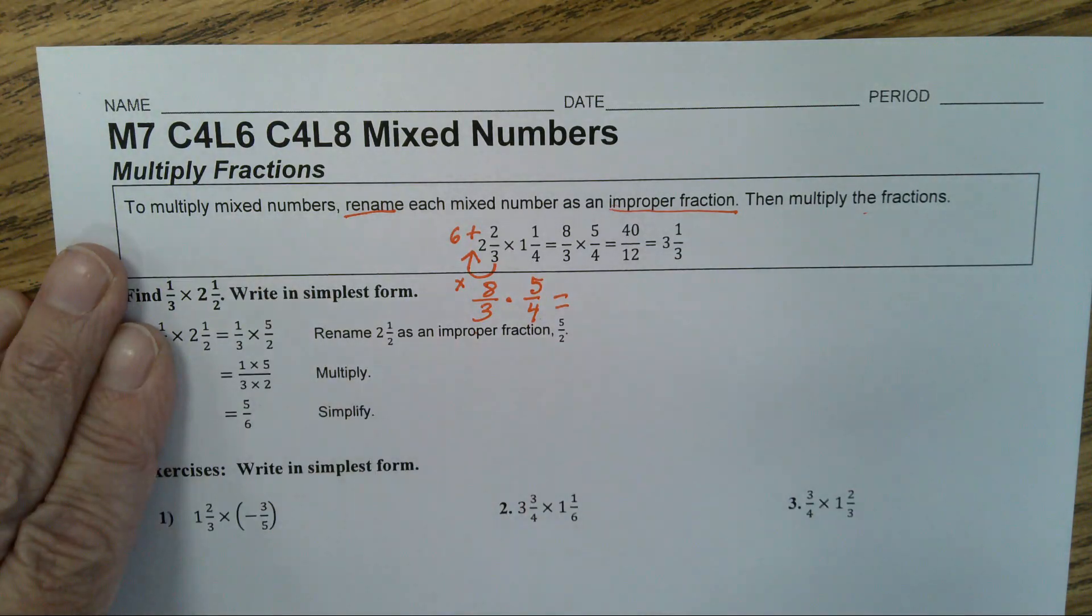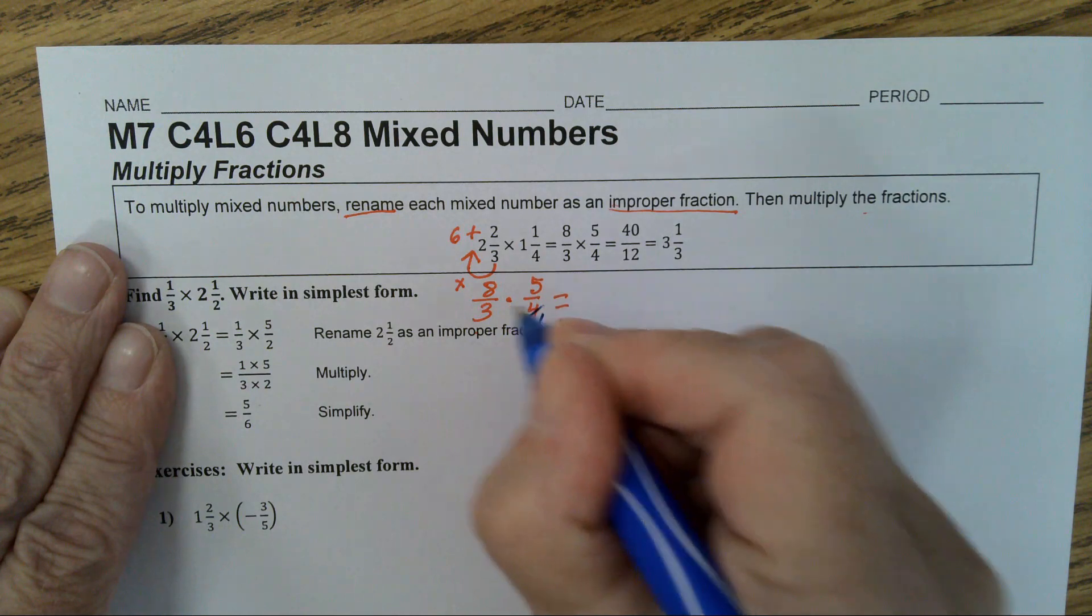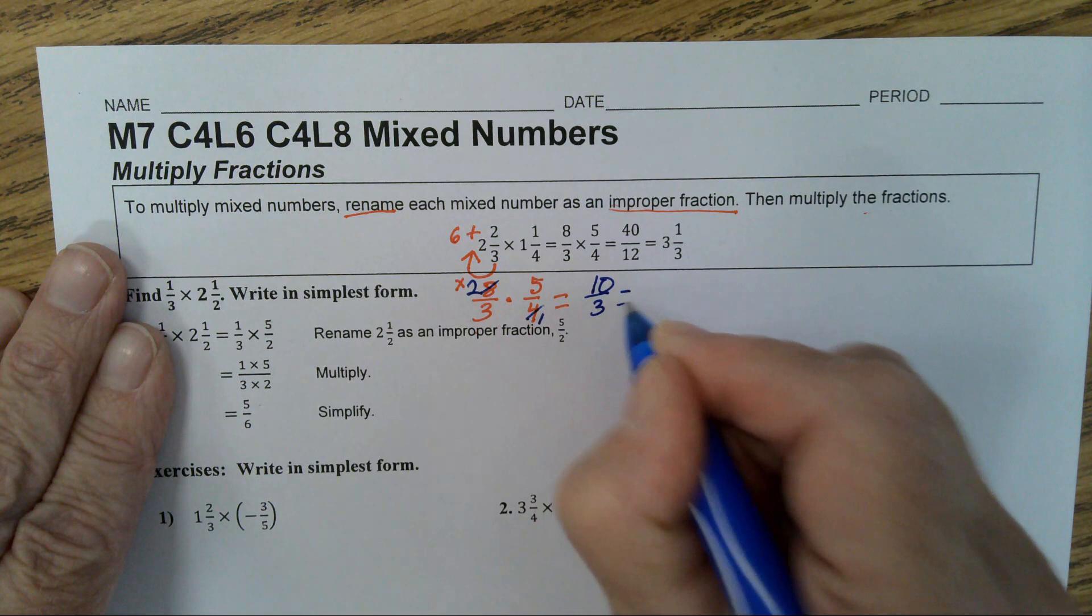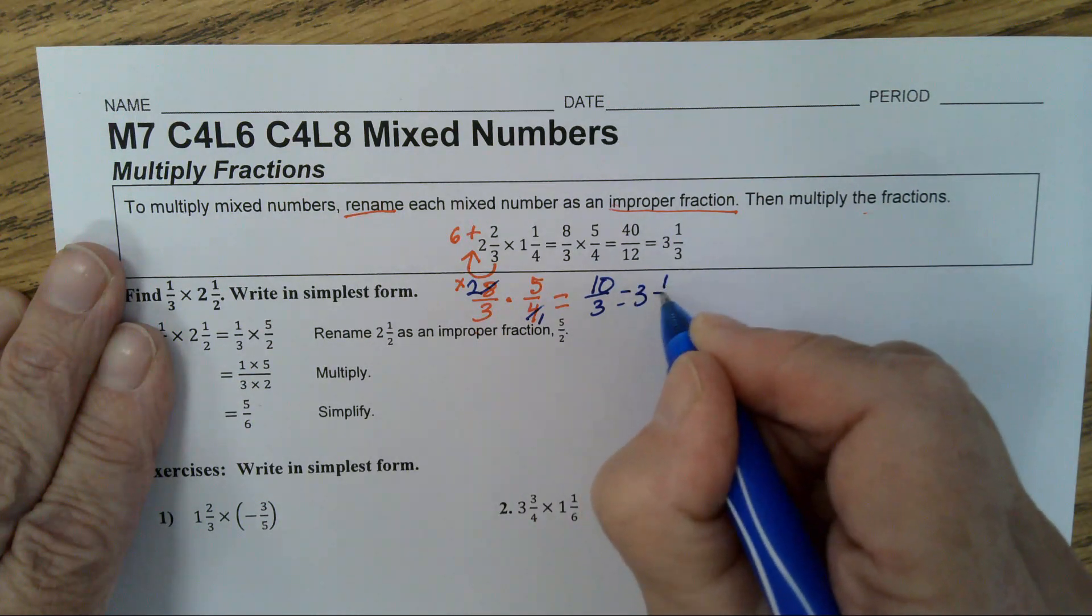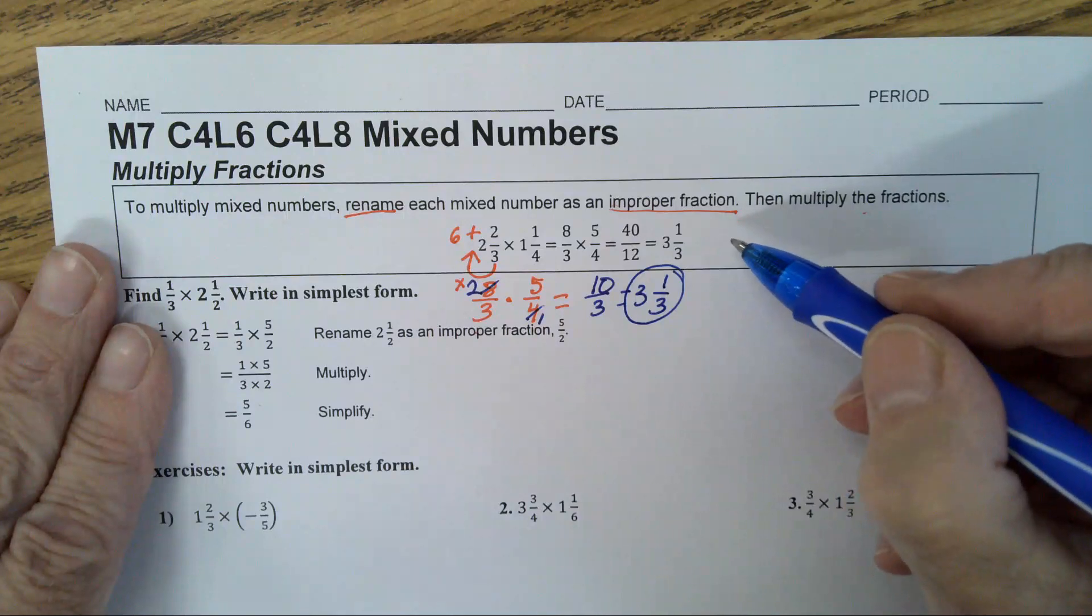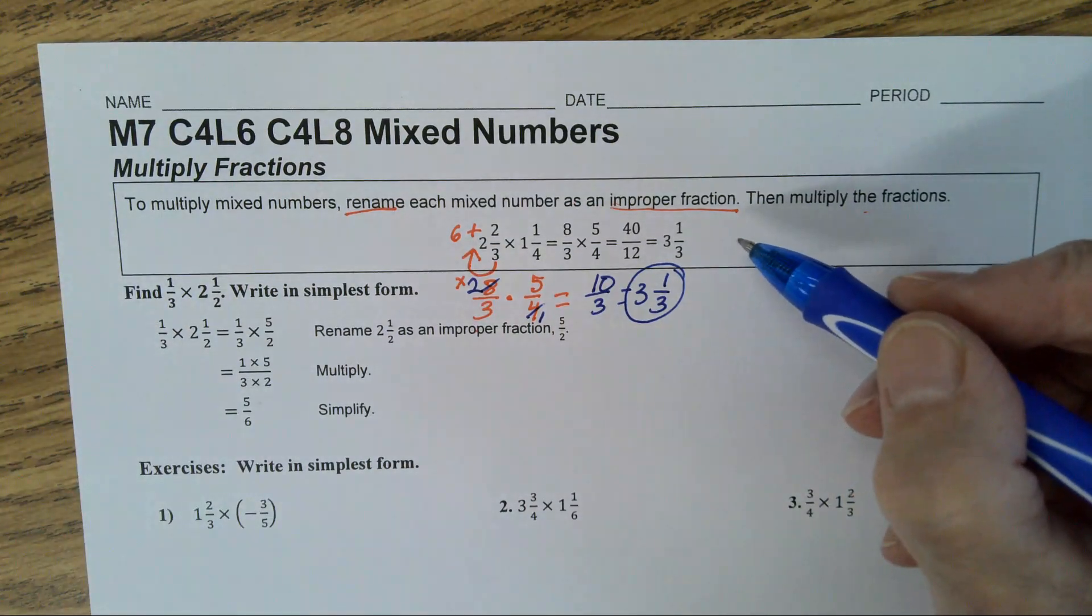Simplify before you multiply. 4 divides 4 once. 4 divides 8 twice. You end up with 10 thirds, which equals 3 and 1 third.